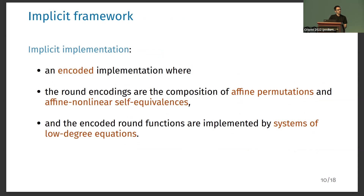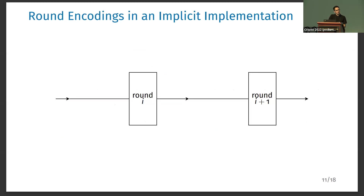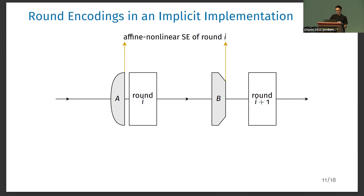We solved this problem by proposing a new method: the implicit framework. The implicit framework is a method to build white box implementations of block ciphers. Implicit implementations are also encoded implementations, meaning they use the idea of encoded rounds and round encodings. But here the round encodings are the composition of an affine permutation and an affine non-linear self-equivalence. By combining these two types, we are able to prevent attacks that break CD implementations and self-equivalence ones. To implement the encoded round functions efficiently, the idea is to represent them with systems of low-degree equations.